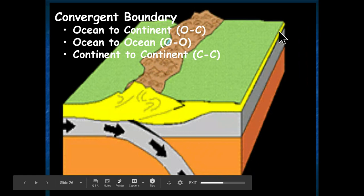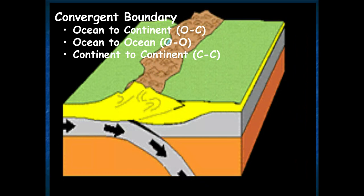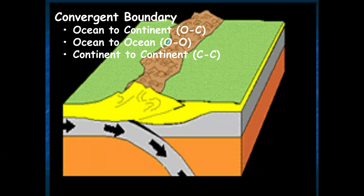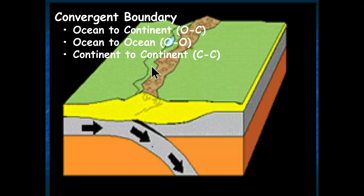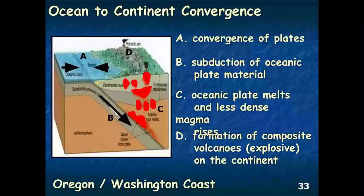Welcome to plate tectonics part three. We're going to continue with the plate tectonics lecture and look at convergent boundaries. In the animation of the block diagram, you'll notice that a convergent boundary means one tectonic plate is colliding with another. There are three types: ocean-to-continent convergence, ocean-to-ocean convergence, and continent-to-continent convergence. Each interaction produces specific types of landforms.